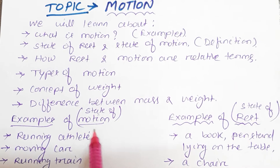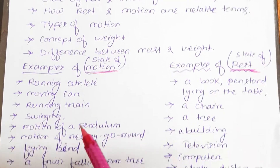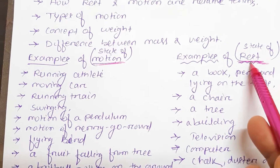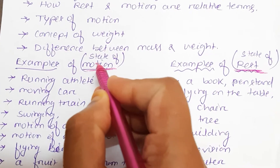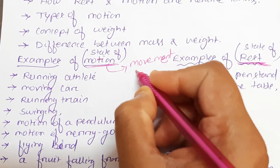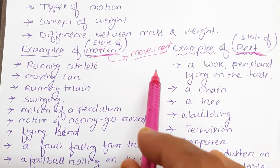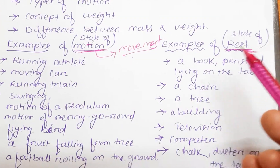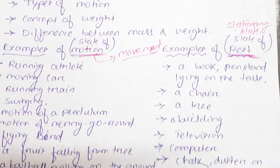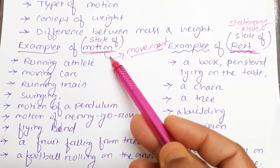Before we go through the term motion, we need to know what is the term rest. You may have seen examples of bodies or objects which are either at the state of motion or state of rest. Motion means movement — both terms are related to the change of position of an object. If the position of an object is not changed, then it is in a state of rest, also known as the stationary state. If the object changes its position, then it is known as state of motion.